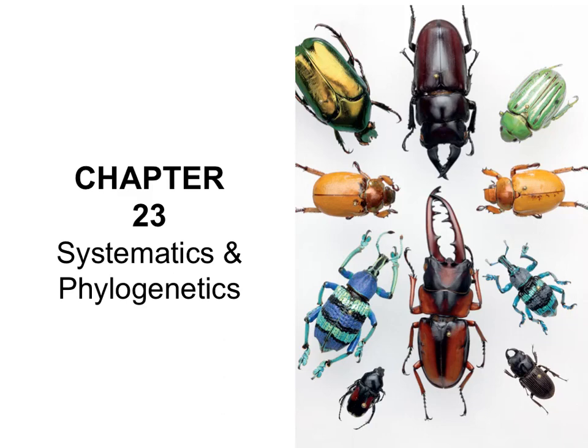Hello everyone! In this chapter we're going to talk about systematics and phylogenetics — the science of how we group organisms together based on the traits that they have in common.